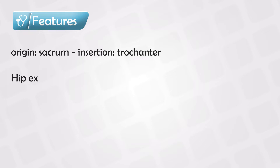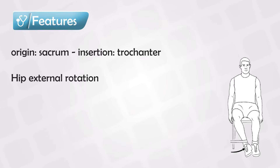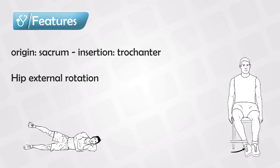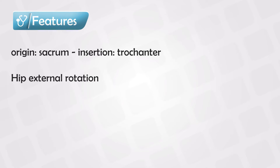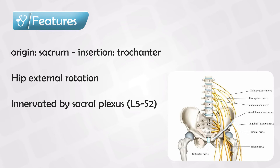When it contracts, it allows for external rotation of the hip, as well as abduction and extension function. It's also one of the stabilizing muscles of the hip. It is innervated by a branch of the sacral plexus, making the nerve roots L5 to S2.